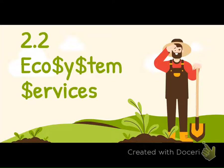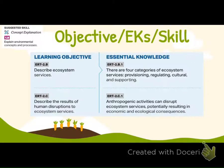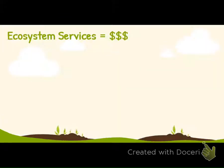The second lecture for the Biodiversity Unit is 2.2 Ecosystem Services. What you need to know is how to describe an ecosystem — there are four types which we'll describe — and describe the results if humans disrupt them, and what happens in that case.